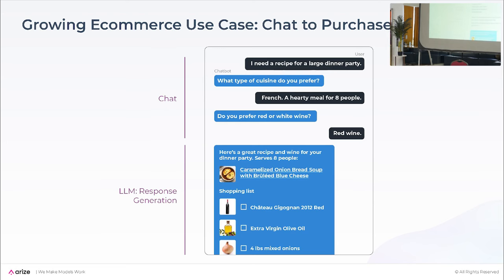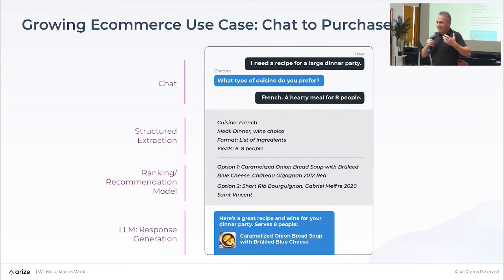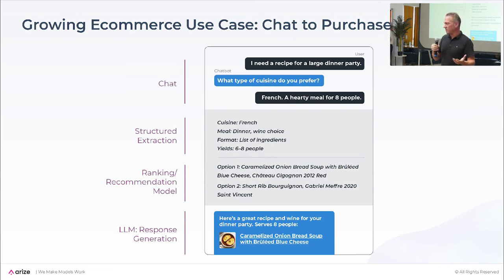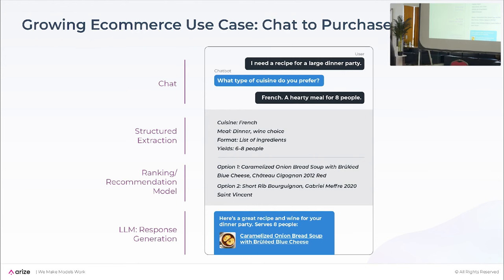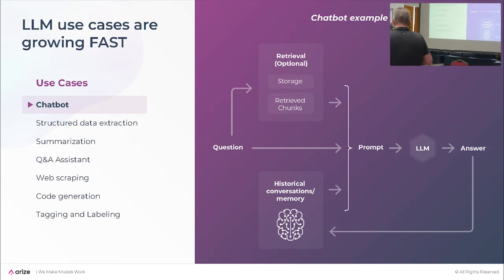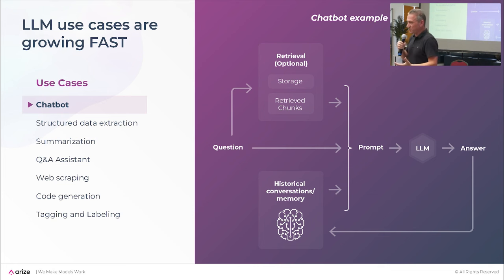What happens in the background is you have some chat, and it's not just one chat experience. There's a structured data extraction — what are the items you might want, what is the wine type you're after? There's potentially some recommendation, some search and retrieval recommendation on the products. And then finally there's some composition at the end. This isn't simply one LLM experience — it's a bunch of use cases: chatbot, structured data extraction, maybe a little summarization at the end, all in one production experience.